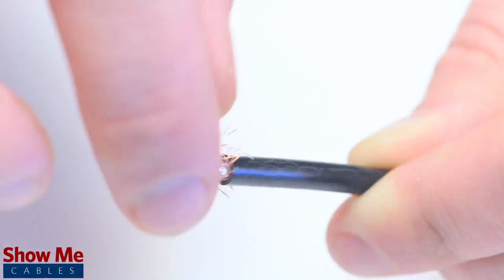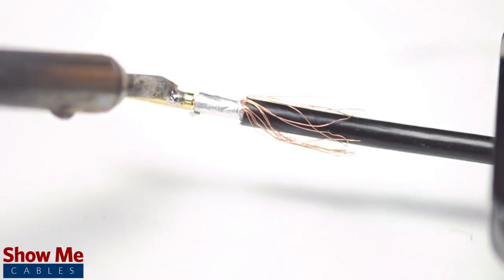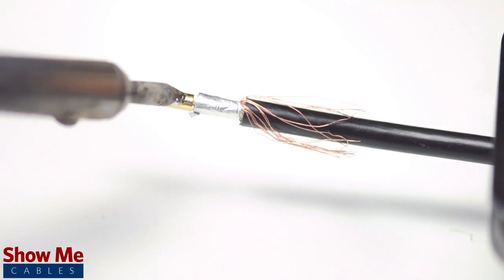Pull back the braided shield and insert the pin onto the center conductor. Solder the pin onto the center conductor and insert the connector housing over the cable.